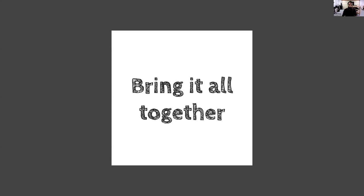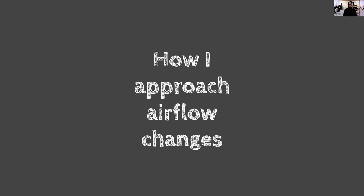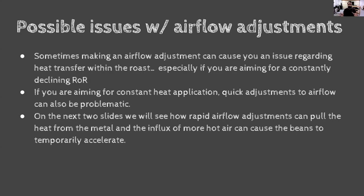How do I approach airflow changes in roasting? Sometimes making an airflow adjustment causes an issue with heat transfer, especially if you're aiming for a constant declining rate of rise. Going from low airflow to higher airflow takes all the heat energy built up in the metal and hot box and shoves it through the drum at once. You'll notice a little blip up in your rate of rise — beans accelerate briefly and then return to line. This is because you're dumping accumulated heat energy from the hot box and metal through the beans all at once when going from low to high airflow.